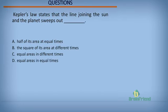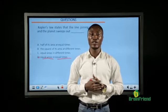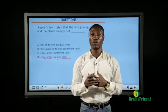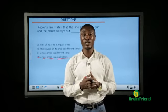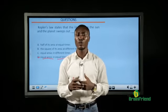2nd question: Kepler's law states that the line joining the sun and the planet sweeps at — what? The correct answer is D: Kepler's law states that the line joining the sun and the planet sweeps equal areas in equal times. I believe at the end of this class on gravitational field potential part 2, we've been able to understand what the solar system is about, natural and artificial satellites, and also the concept of escape velocity. Thank you very much and see you in the next class.